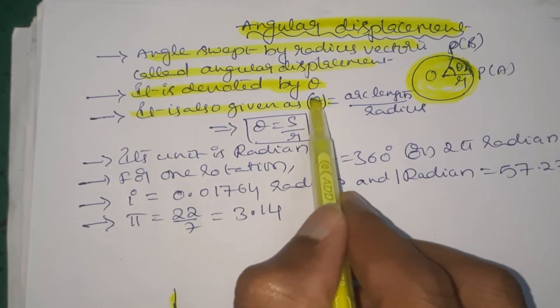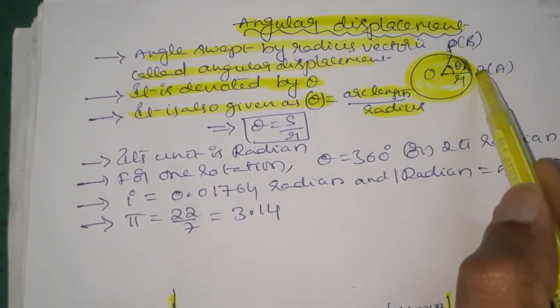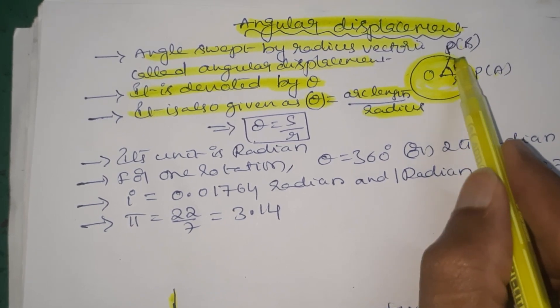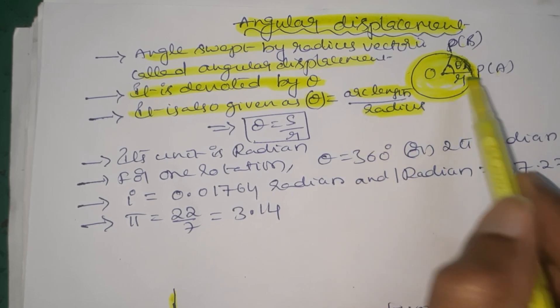It is also given as theta equals arc length divided by radius. The arc length is the curve distance from point A to point B, and r is the radius.